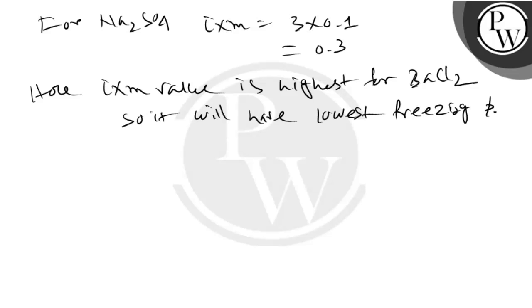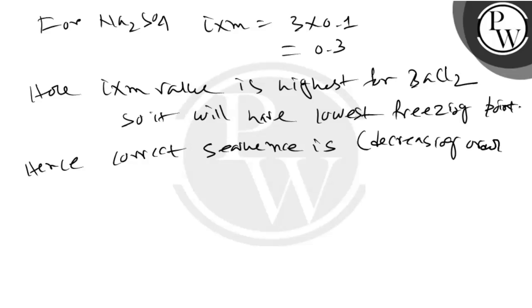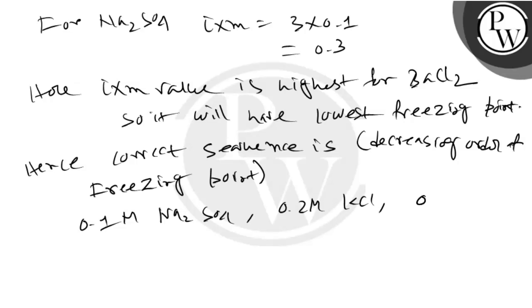Hence the correct sequence in decreasing order of freezing point is 0.1 molar Na₂SO₄, then 0.2 molar KCl, then 0.2 molar BaCl₂. Therefore option C is the correct answer.